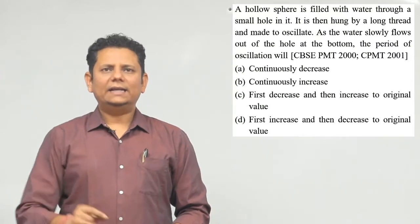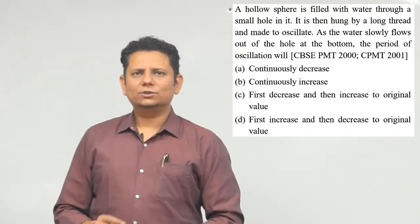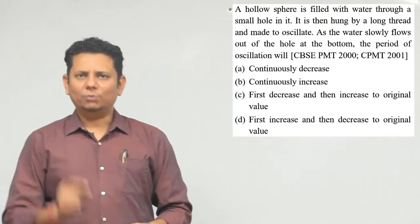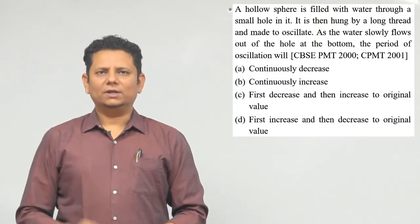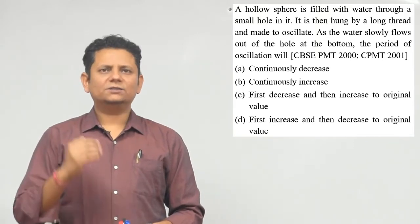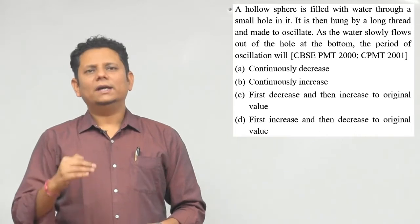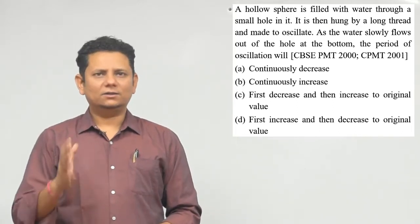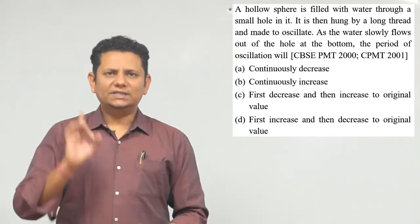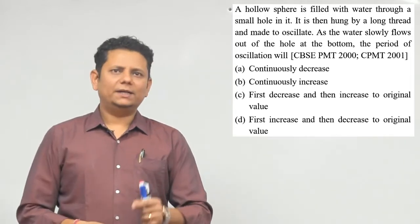The question says: a hollow sphere is filled with water through a small hole in it, then it is hung by a long thread and made to oscillate as the water slowly flows out of the hole at the bottom. The options for the period of oscillation are: continuously decrease, continuously increase, first decrease then increase to its original value, or first increase and then decrease to original value.